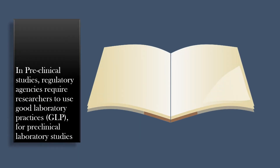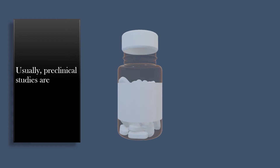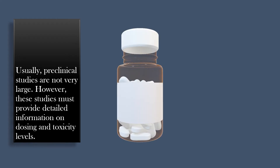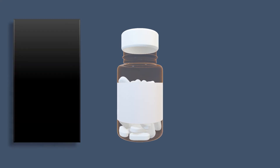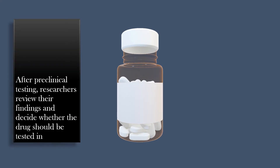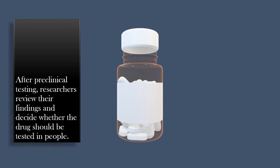In preclinical studies, regulatory agencies require researchers to use good laboratory practices (GLP) for preclinical laboratory studies. Usually, preclinical studies are not very large. However, these studies must provide detailed information on dosing and toxicity levels. After preclinical testing, researchers review their findings and decide whether the drug should be tested in people.